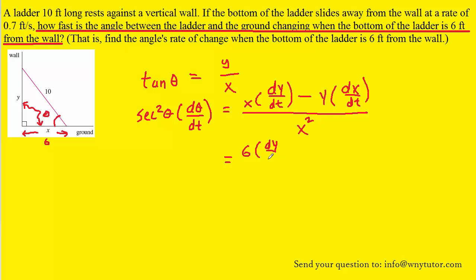For now we'll leave dy dt alone. The y is also going to be relatively easy to determine because we can just simply use the Pythagorean theorem. Once again note that we have a right triangle so we can do six squared plus y squared equals ten squared.